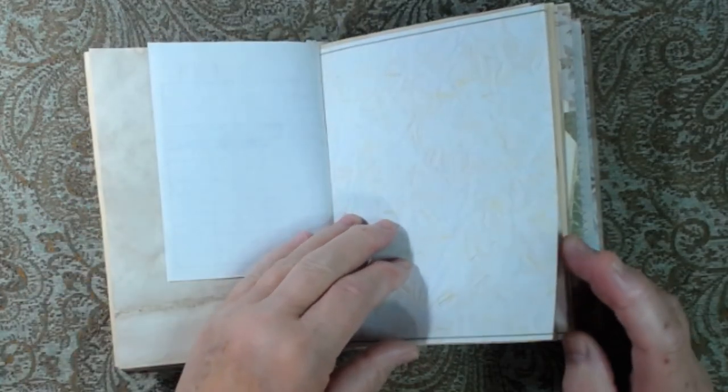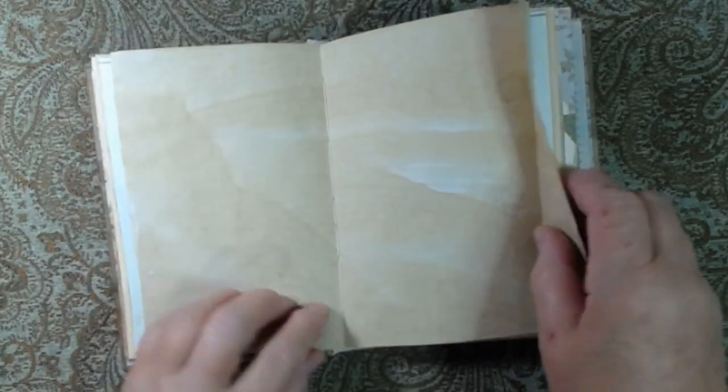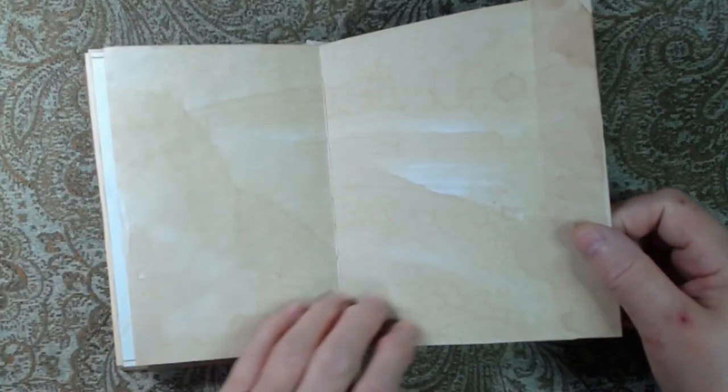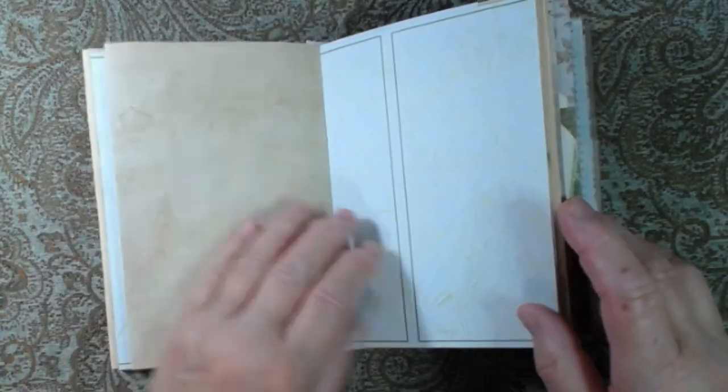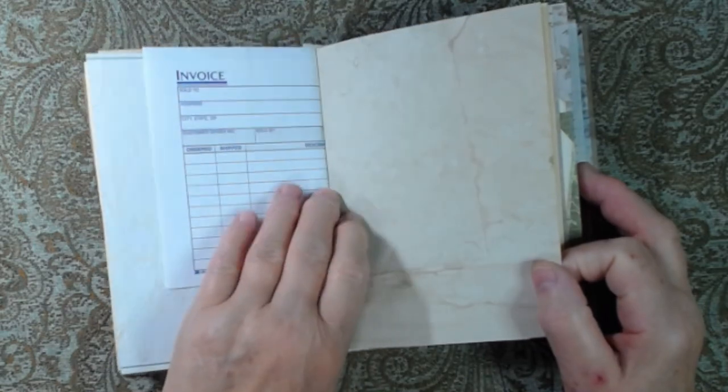Invoice. And I've used a five-hole pamphlet stitch to attach the signatures to a hidden spine.